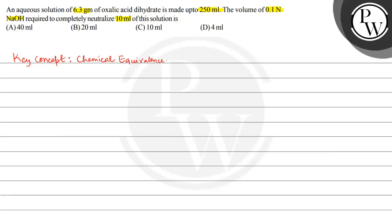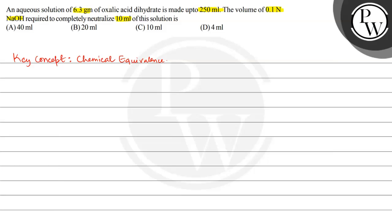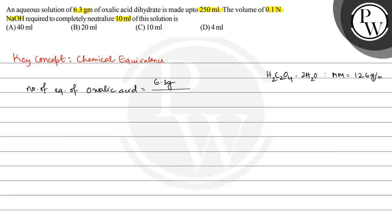We have seen 6.3 grams of oxalic acid dihydrate is made up to 250 ml. Let us first calculate the concentration of this solution. The number of equivalents of oxalic acid is equal to given mass divided by equivalent mass. The given mass is 6.3 grams. The formula of oxalic acid dihydrate is H₂C₂O₄·2H₂O, and the molar mass is equal to 126 grams per mole.